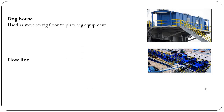Dog house. It is a storage area on the rig floor used to keep equipment. Inside this store we can keep manual tongs, chain tongs, clamps, bit breakers, pipe wrenches, and all the other stuff needed on the rig floor. We can also have space for the crew where they can sit inside this dog house.